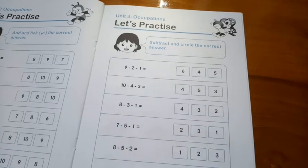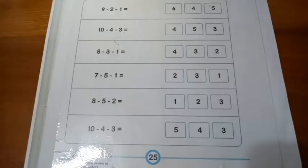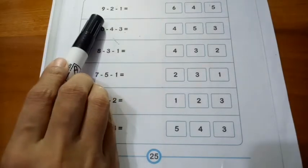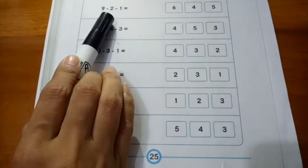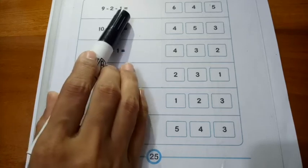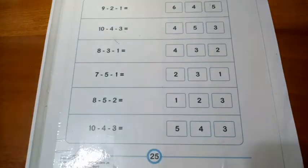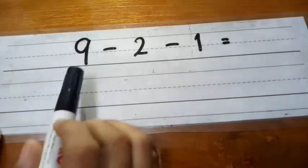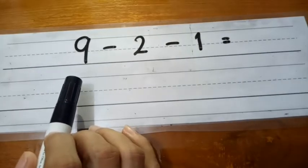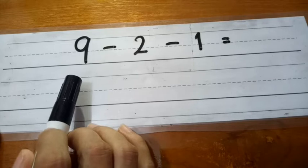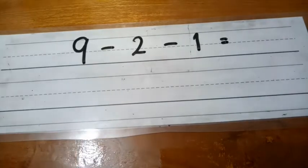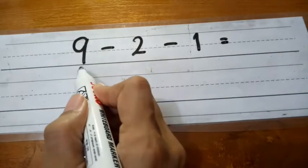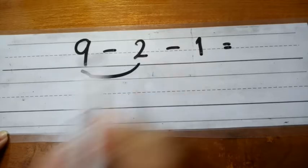Let's try together. Number one: nine minus two minus one equals. We want to try to count the subtraction with more numbers. Which one will you do first? Okay that's correct, nine minus two.